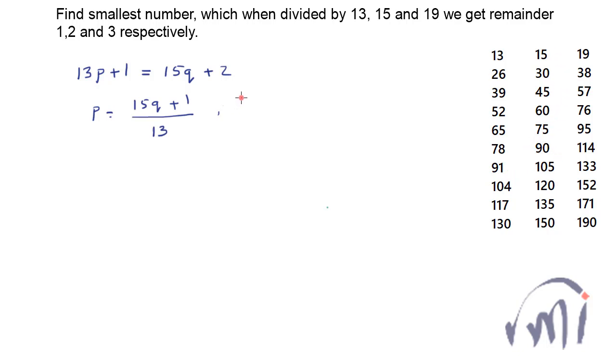So this can be written as 15 multiplied by 6 plus 1 divided by 13 and this gives us value of p equal to 7. So if q is equal to 6 then p is equal to 7.